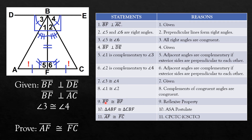Angle 3 and angle 4 are congruent, which was given. And by complements of congruent angles are congruent, angle 1 and angle 2 are congruent. Line segment BF is congruent to line segment BF by reflexive property. Since we have three parts — angle, side, angle — triangle ABF is now congruent to triangle CBF by ASA postulate. Finally, line segment AF is congruent to line segment FC by CPCTC. Since we have demonstrated the proof, we write QED.